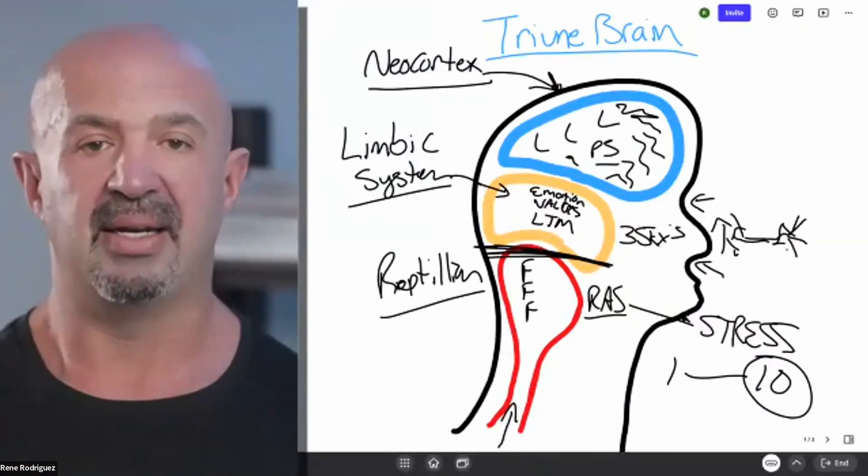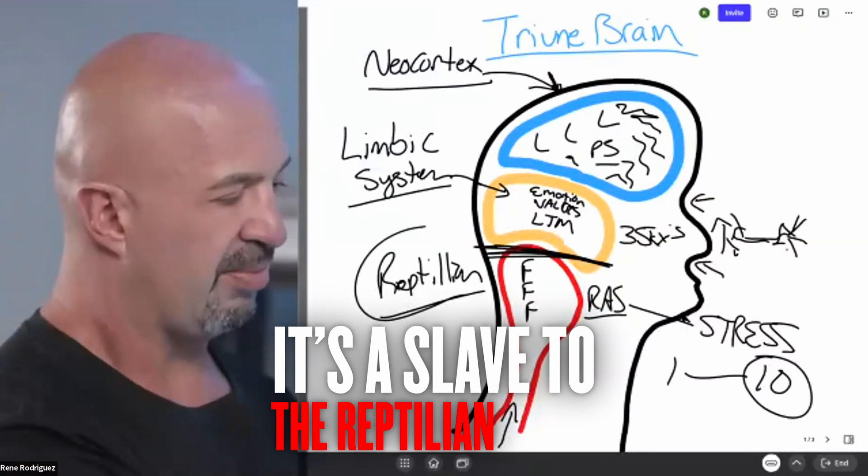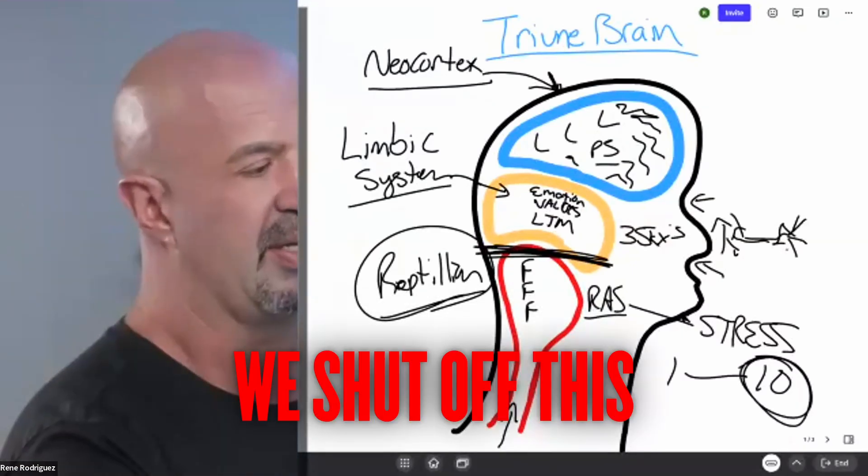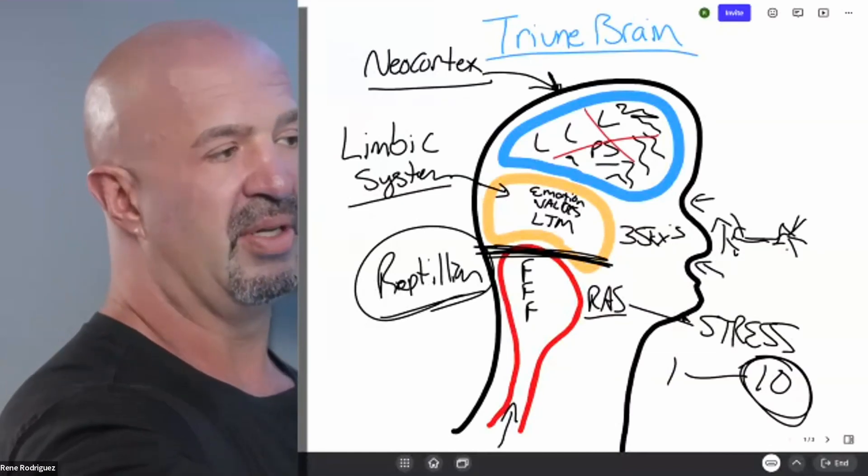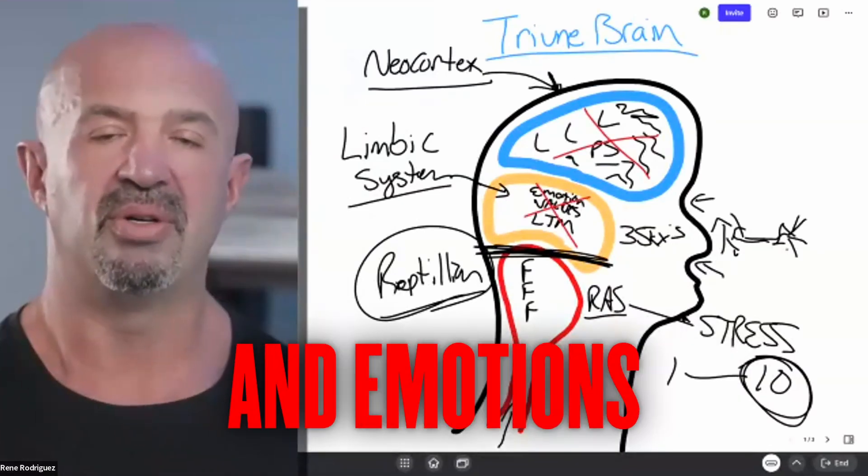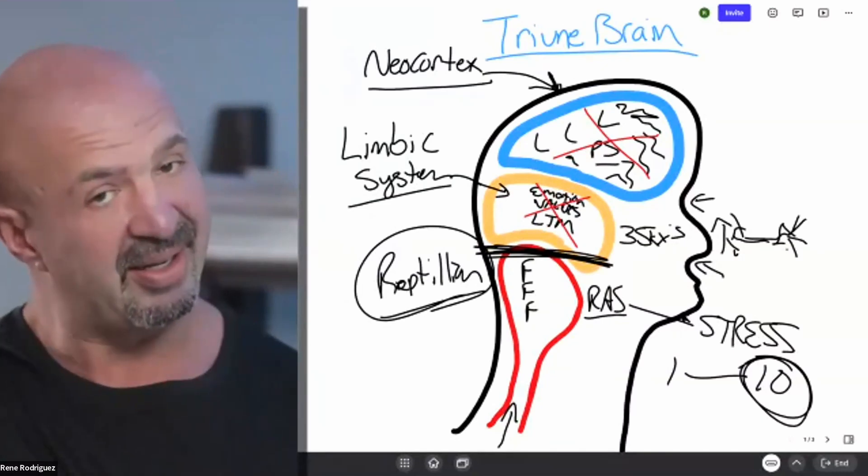The challenge, though, with this part of the brain is that it's a slave to the reptilian brain. Meaning, if for some reason stress is happening, we shut off this. That means that we don't get access to language, learning, and logic. We don't get access to our values and emotions. Imagine dealing with somebody that isn't there.